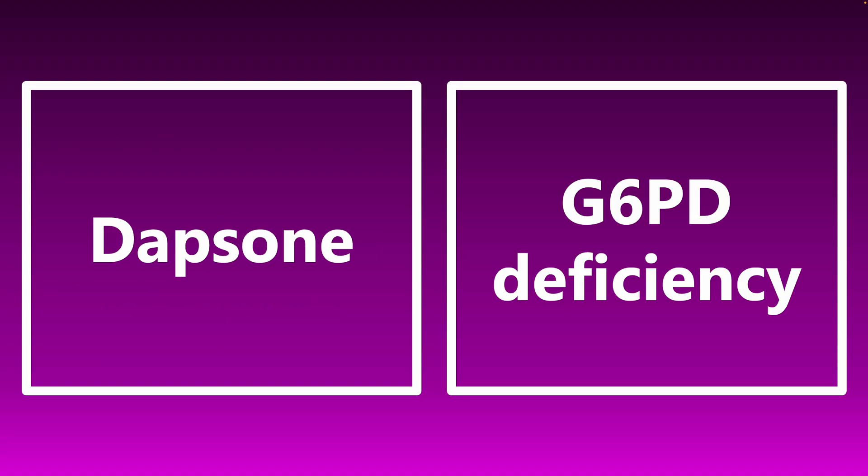Dapsone — if you see this on the exam, I want you to be thinking about G6PD deficiency. Dapsone is a medication that is not really used in medical application that much anymore. There are a lot of medications like this on Step 2CK that are obscure, not used clinically, but have weird side effects and adverse effects. You need to know Dapsone in particular because it is associated with G6PD deficiency and can precipitate a hemolytic crisis, similar to fava beans from Part 1.